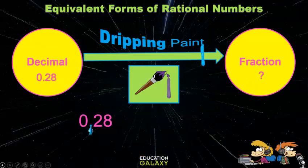We'll use the dripping paint strategy to write a decimal as a fraction. Dripping paint? Yes. Imagine the decimal point as a blob of paint that runs down and forms a one. Write a zero under each digit to the right of the decimal, and there's your fraction, twenty-eight over a hundred.